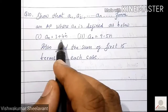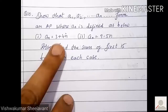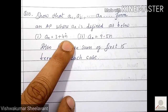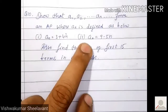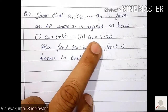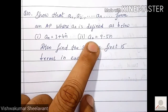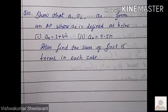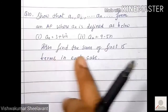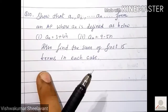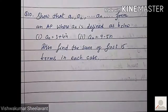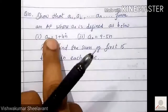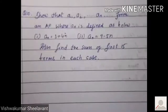an equal to 3 plus 4n means for some value of a and some value of d, if you simplify, an becomes 3 plus 4n. Similarly, for some a value and some d value, if you simplify an, you get 9 minus 5n. After that, we also have to find the sum of first 15 terms in each case. First, we have to show that an AP is formed by these two formulae.